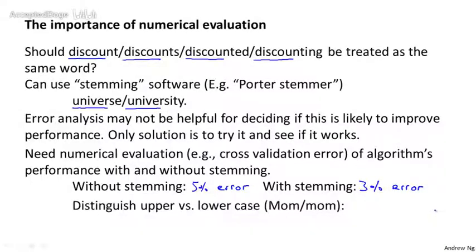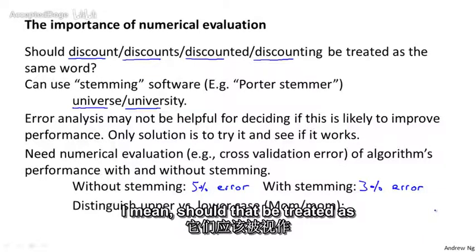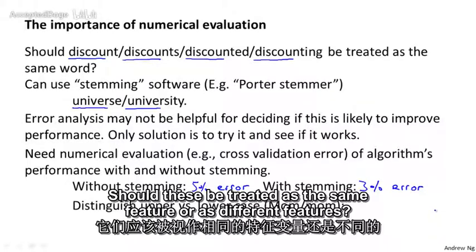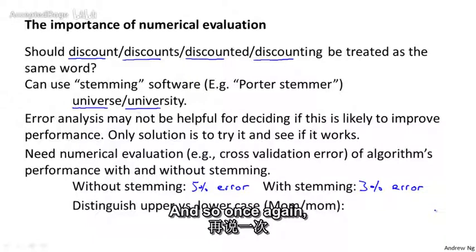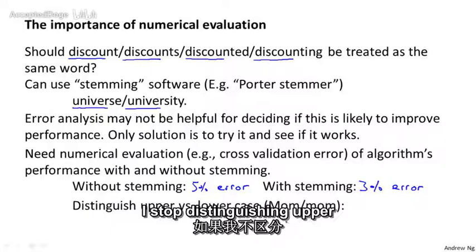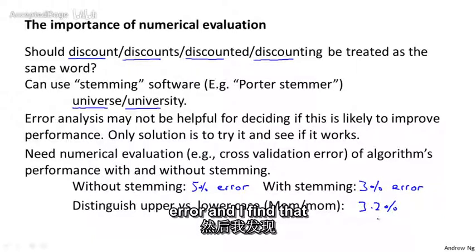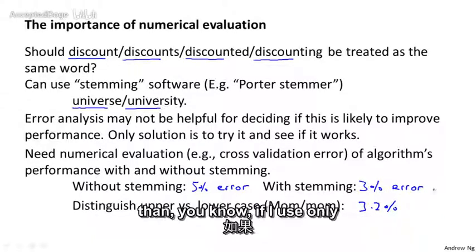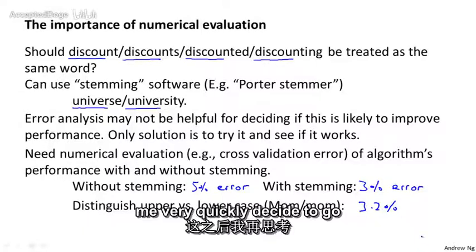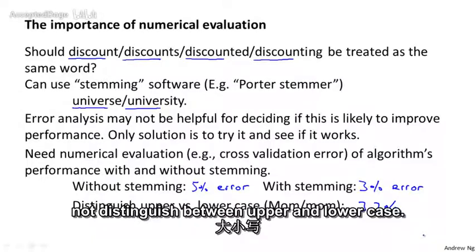And just as one more quick example, let's say that you're also trying to decide whether or not to distinguish between upper versus lowercase. So is the word mom with uppercase M versus lowercase m, should that be treated as the same word or as different words? Should these be treated as the same feature or as different features? And so once again, with a way to evaluate our algorithm, if you try this out, if I stop distinguishing upper and lowercase, maybe I end up with 3.2% error. And I find that therefore this does worse than if I use only stemming. And so this lets me very quickly decide to go ahead and to distinguish or to not distinguish between upper and lowercase.